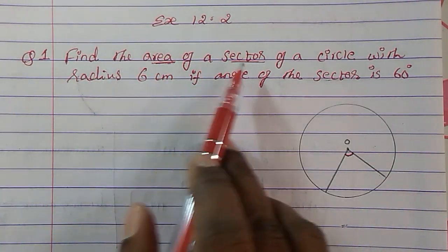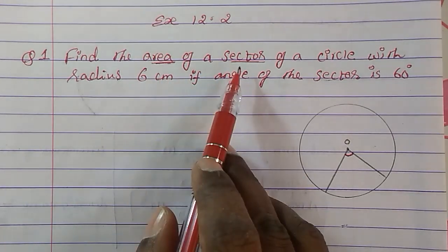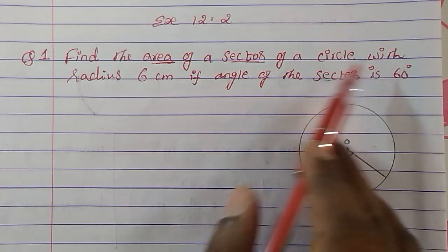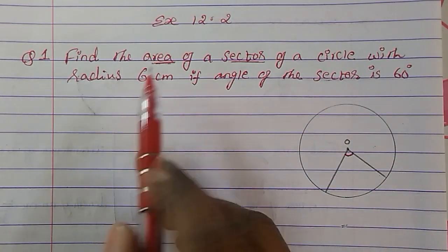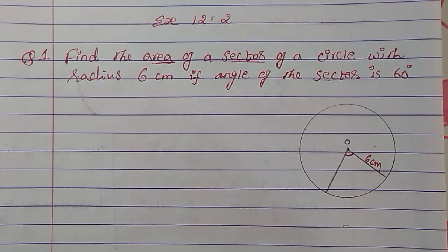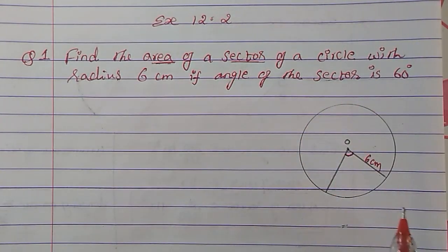Here they're asking to find the area of a sector, but they're not telling which sector, minor or major. Find the area of a sector with radius 6 cm. So this is radius 6 cm.